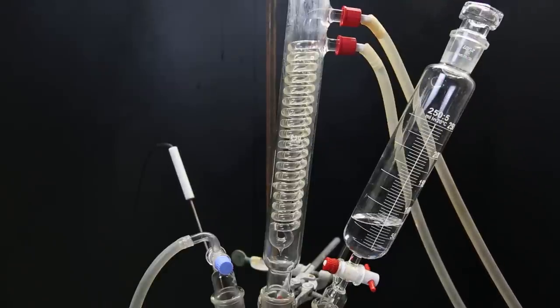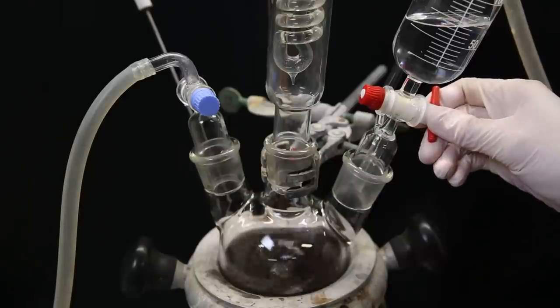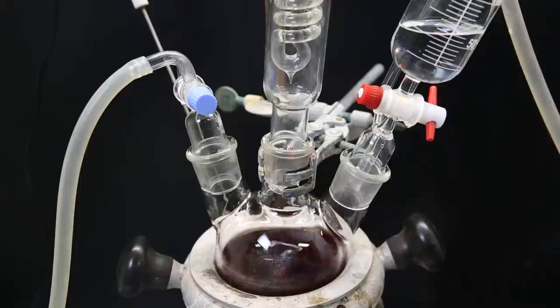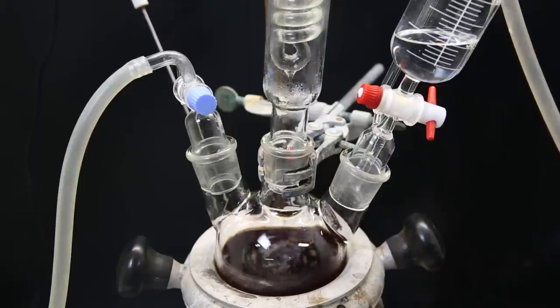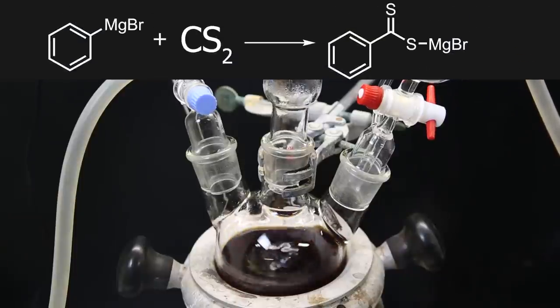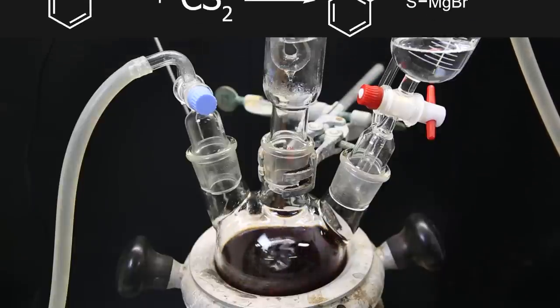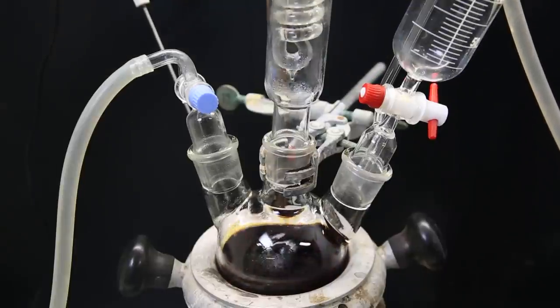I stop with the dropping funnel again, and then dropwise add the carbon disulfide solution to the flask. I increase the exposure of the camera, and we can see the mixture turns red during the addition. In the reaction, the carbon disulfide will react with the phenylmagnesium bromide, to form the magnesium bromide salt of diethylbenzoic acid. When the addition is complete, I leave it to stir for an hour.